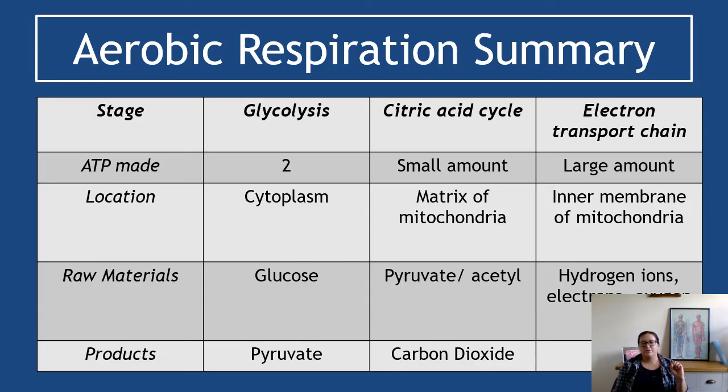The products for glycolysis is pyruvate. The product of the citric acid cycle is carbon dioxide, that's the main one. And the product of the electron transport chain is water. Now this table here is the three processes stripped really really far back. It's not including the role of acetyl CoA, of NAD, of dehydrogenase enzymes.